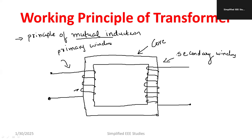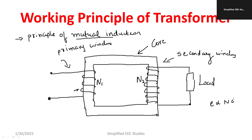Usually we are going to keep the load at the secondary side. Here, the number of turns at the primary is called N1, and the number of turns at the secondary is called N2. From Faraday's laws of electromagnetic induction, E is directly proportional to N·dφ/dt. As the number of turns is very high, obviously EMF will also be high. If you provide more number of turns you get high voltage; if less turns, you get low voltage.